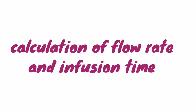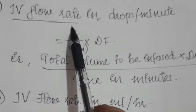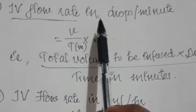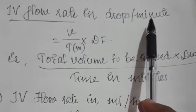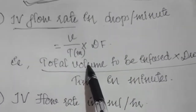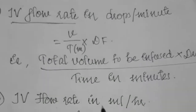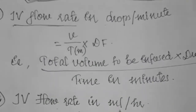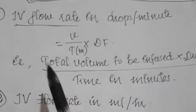Hi everyone, here we will see how to calculate IV flow rate and duration of infusion. To calculate IV flow rate, we have two formulas: IV flow rate in drops per minute, and IV flow rate in milliliter per hour.